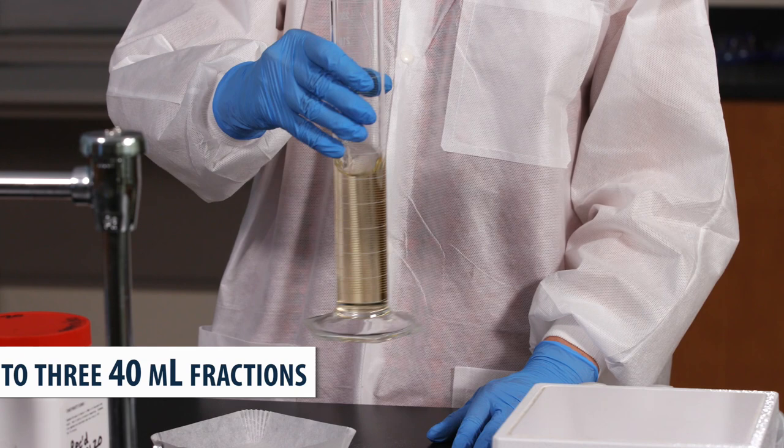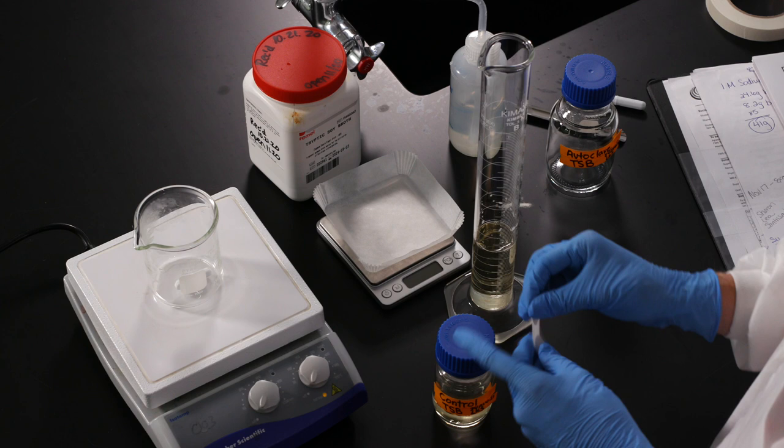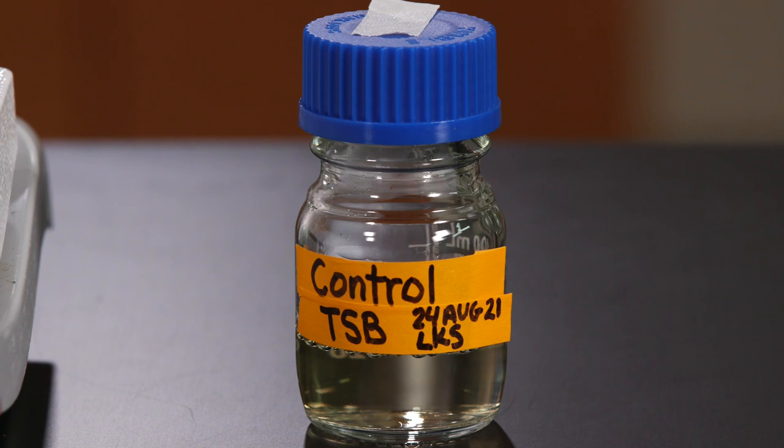Swirl the solution and divide it into three 40 ml fractions. Pour 40 ml of the broth into one bottle, cap it, and place a piece of autoclave tape over it. This is our control.